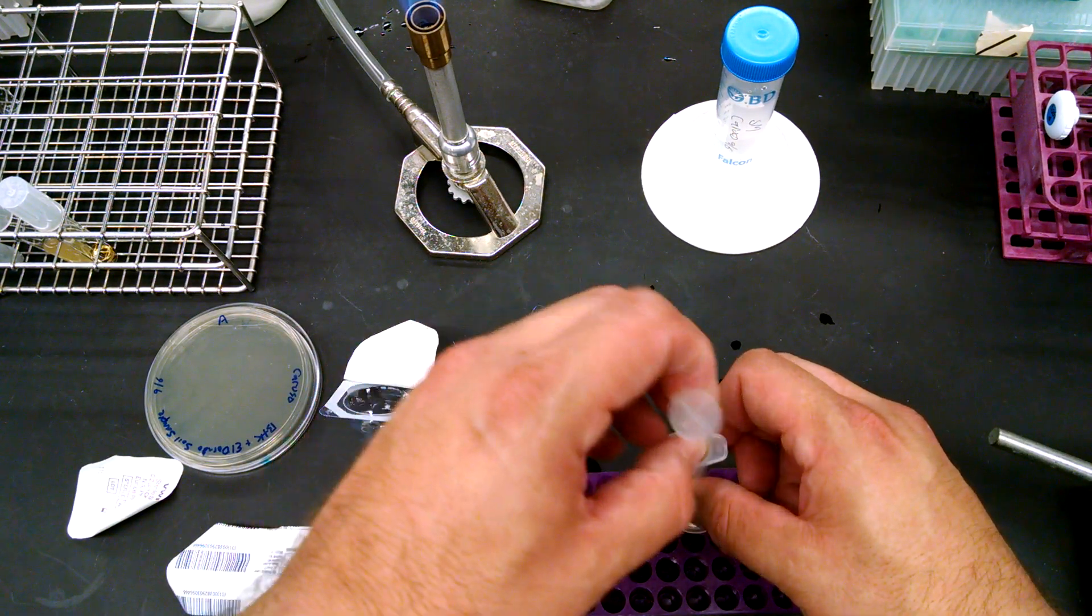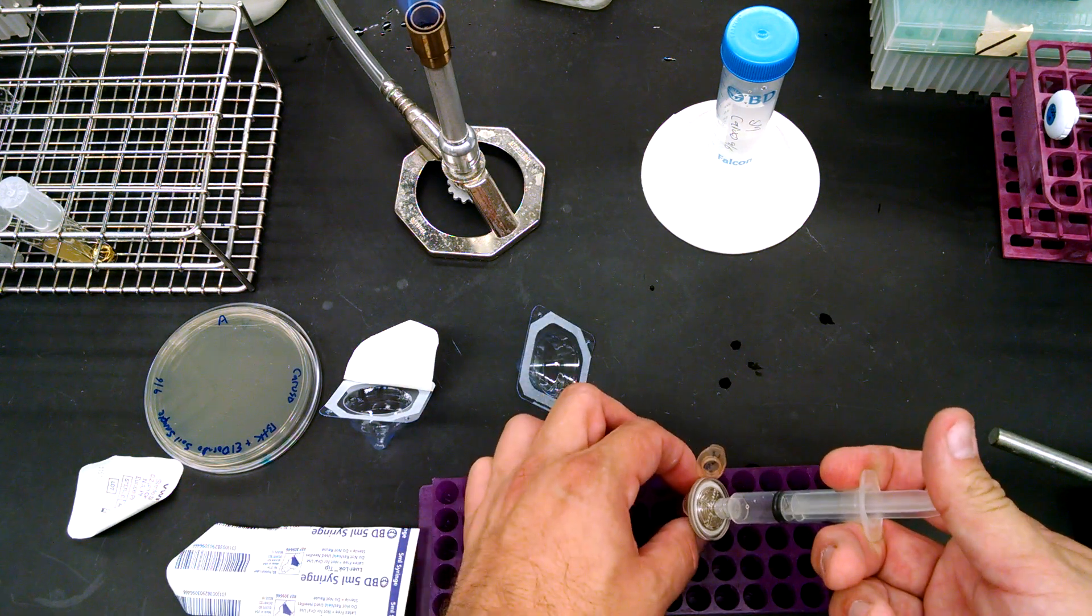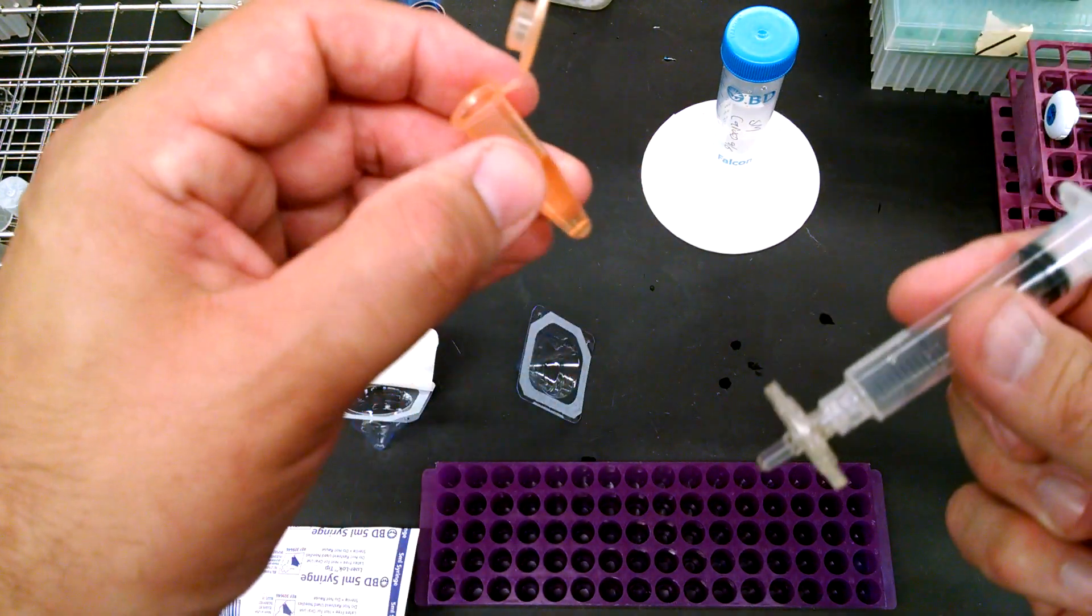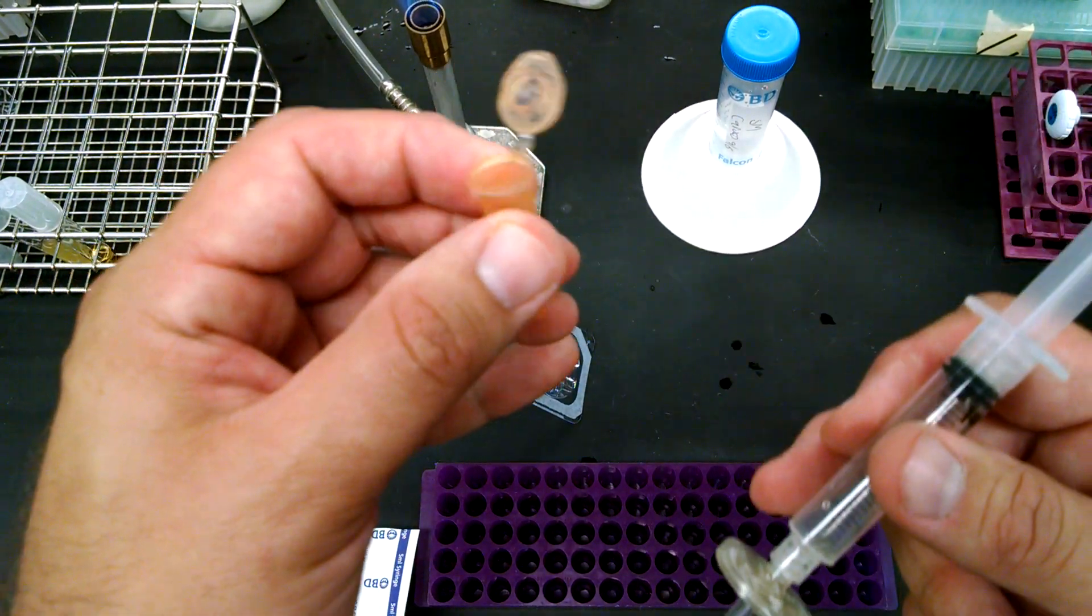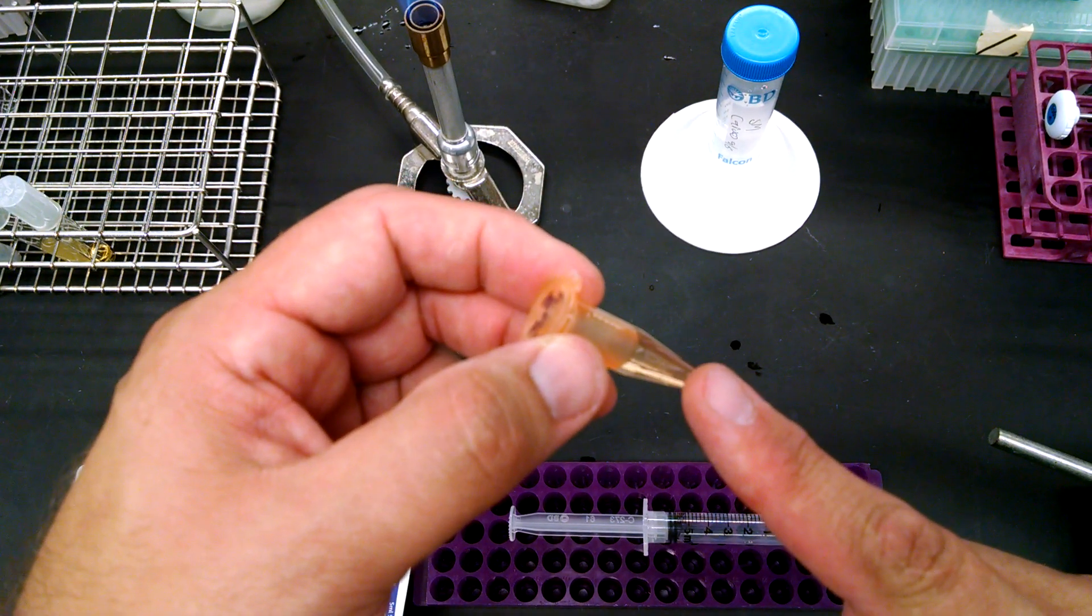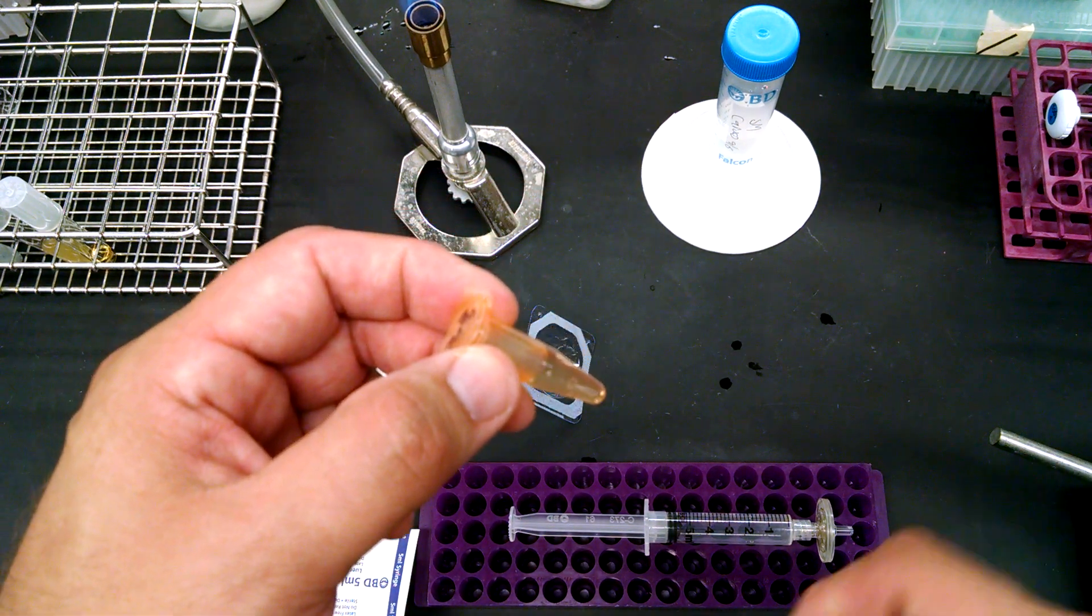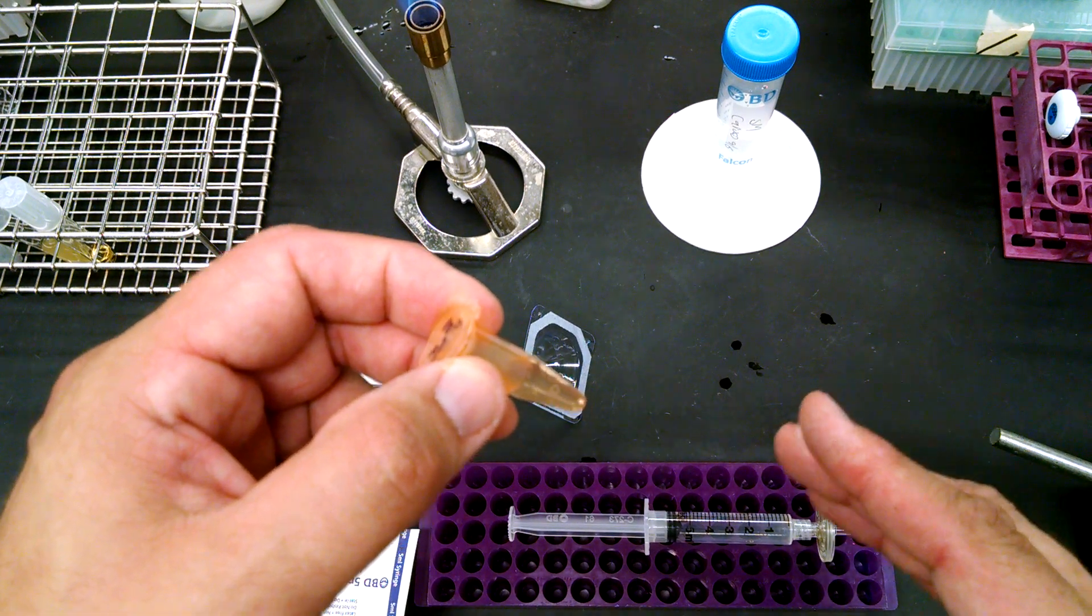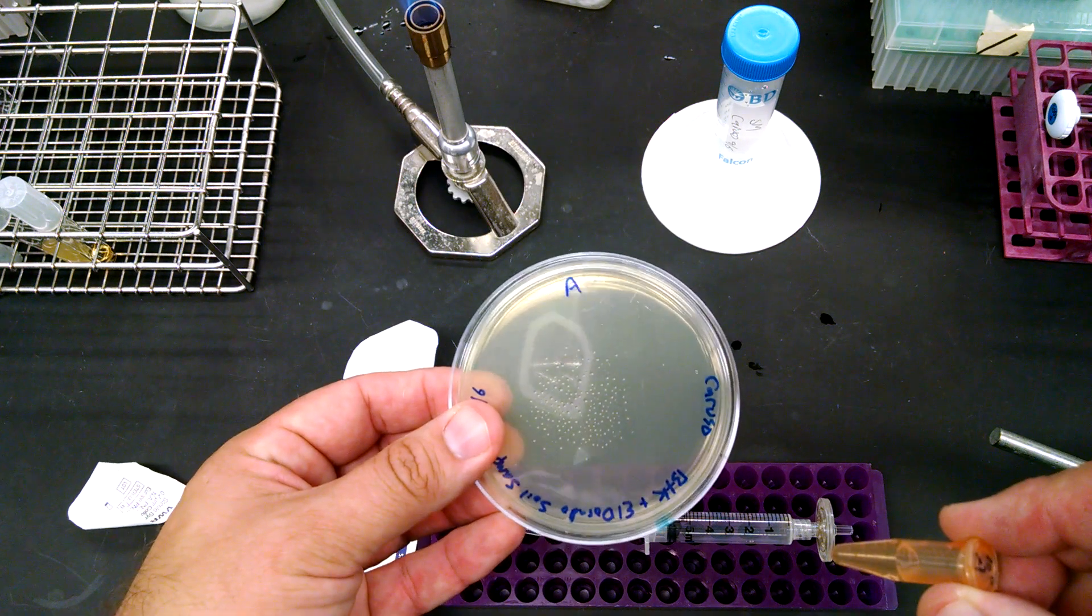And when you push it through, instead of that dark brown, yucky looking sample that we had, now what we have is crystal clear again, but hopefully filled with phage. So what I'm going to do now is I'm going to take 50 microliters of this, and I'm going to add it to a half mil culture of BTK. Let it sit for five to 20 minutes maximum, just like we did on that first day. Add some top agar, put it on this plate.